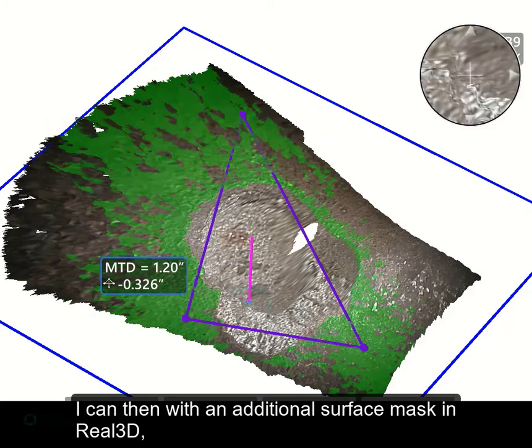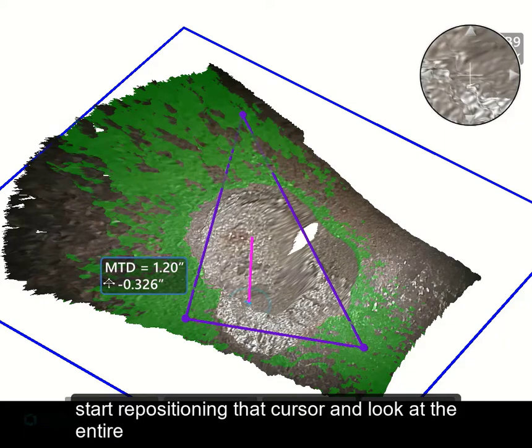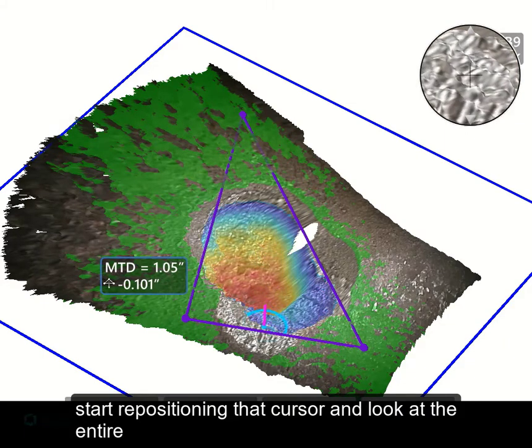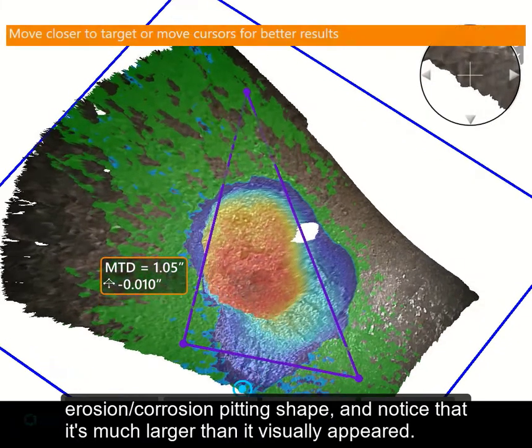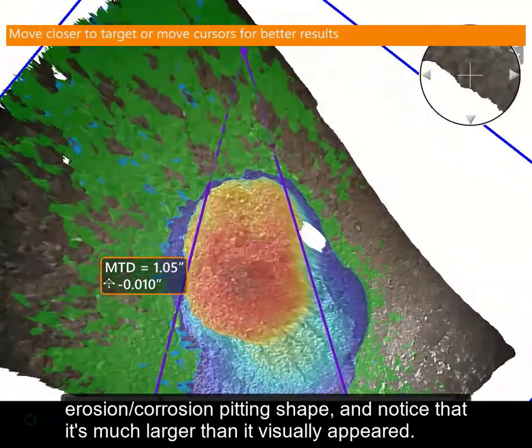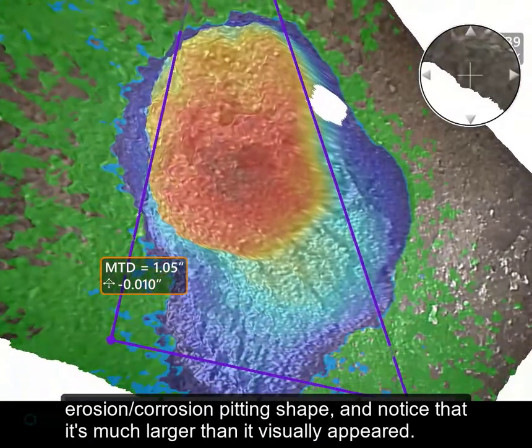I can then, with an additional surface mask in Real 3D, start repositioning that cursor and look at the entire erosion-corrosion-pitting shape and notice that it's much larger than it visually appeared.